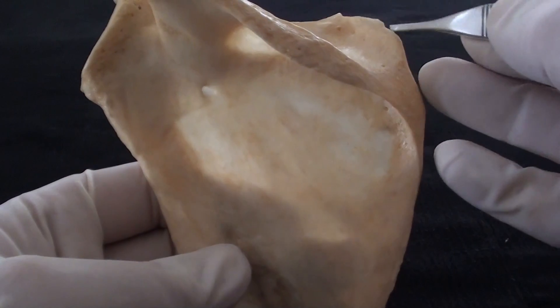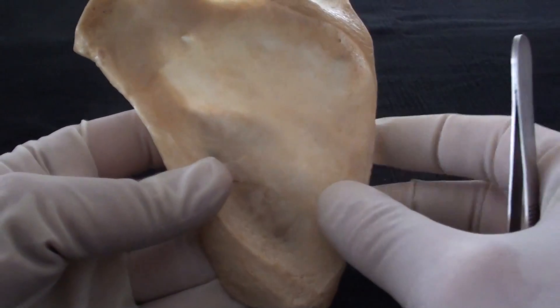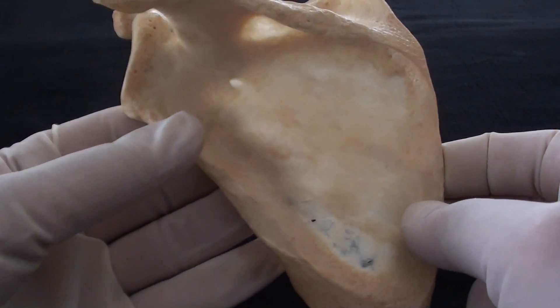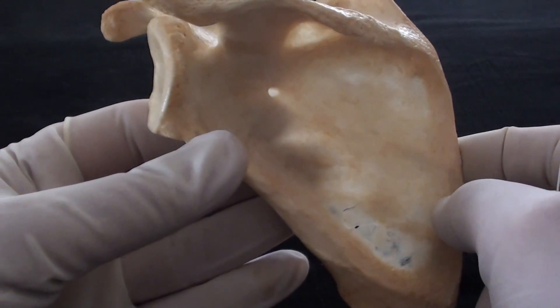Although the superior angle and the inferior angle of the scapula were quite easy to identify, the third angle, which is referred to as the lateral angle, appears to be somewhat mysterious.